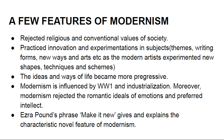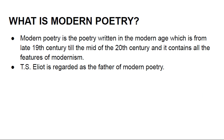Moving towards the definition of modern poetry: modern poetry is the poetry written in the modern age, which is from the late 19th century till the mid of the 20th century, and it contains all the features of modernism. T.S. Eliot is regarded as the father of modern poetry.